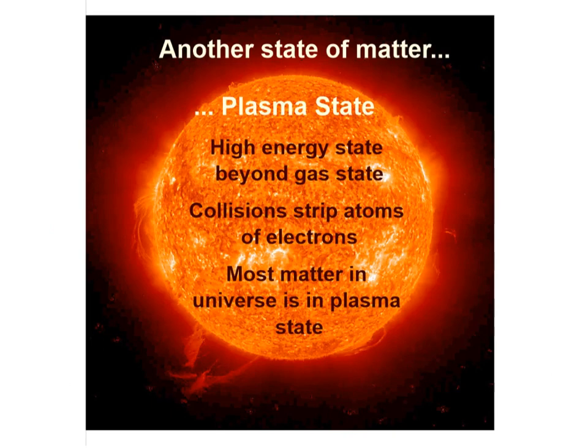Now let's take a look at one more state of matter. Actually, the states of matter we've looked at so far, solid, liquid, and gas are incredibly rare in the universe. We just don't see them very often. By far, the most common state of matter in the universe is the plasma state. And the plasma state comprises the sun. Most of the matter between stars and galaxies is also in the plasma state. What is the plasma state? It's a very high energy state beyond the gas state. When those collisions in that gas state end up stripping the atoms of their electrons, they end up becoming a plasma state. And that is what most of the matter in the universe is made of.